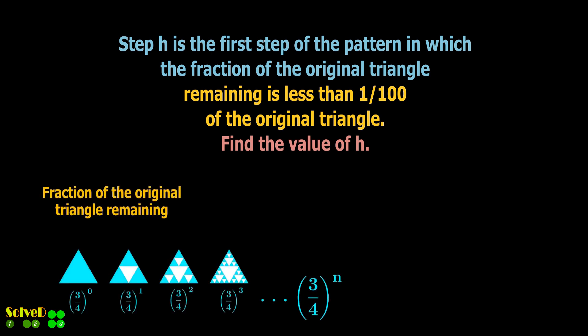For nth step the fraction of the original triangle remaining is given by this. Replace n by H and set this term less than one by hundred. So the problem becomes solving an inequality.